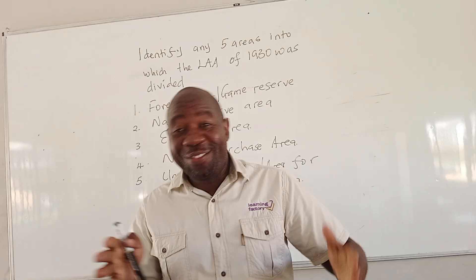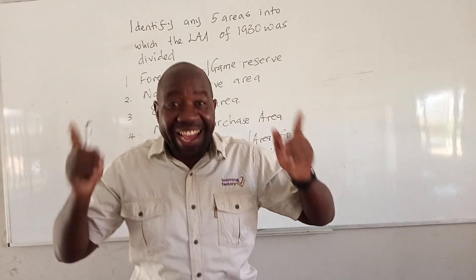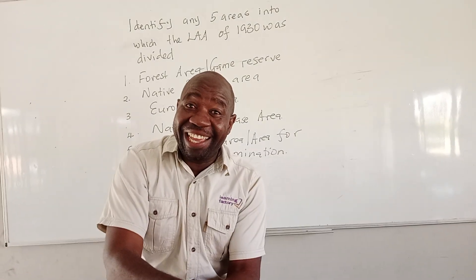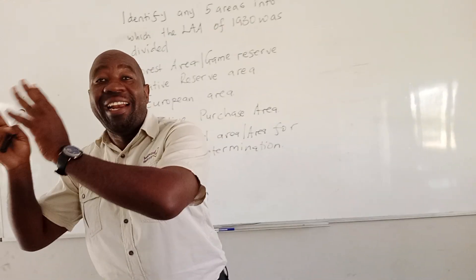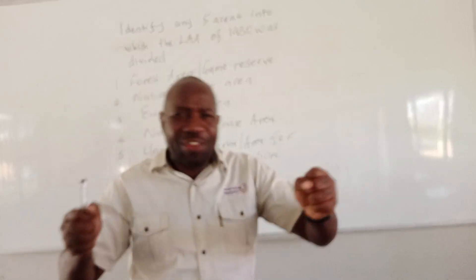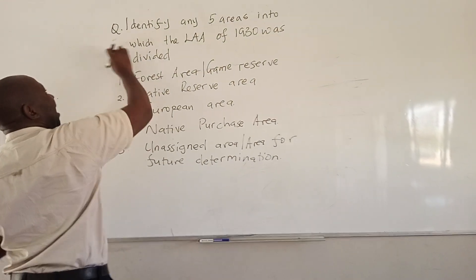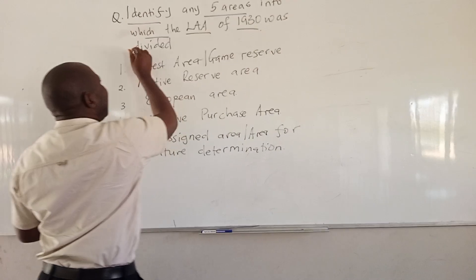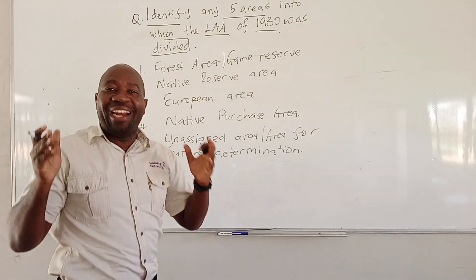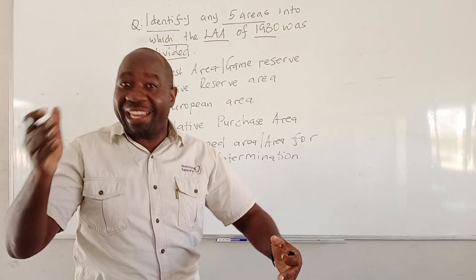Hi, how are you? It's Doko Teramuzo. Today we want to talk about the Land Apportionment Act. In 1930, the whites apportioned and divided the land — the whites were given land and the Africans were also given land. We want to look at the categories, how this land was divided. Our objective is identifying the five areas into which the Land Apportionment Act of 1930 was divided.